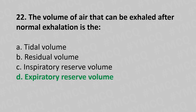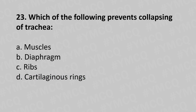Now let's move to question number twenty-three. Which of the following prevents the collapsing of the trachea? Option a, muscles; option b, diaphragm; option c, ribs; option d, cartilaginous rings. And the answer is option d, cartilaginous rings.